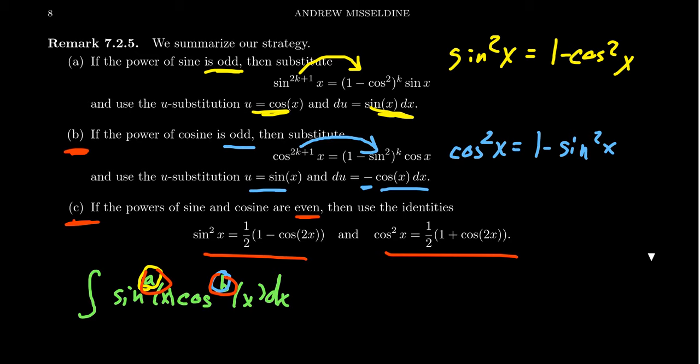Now, the higher the exponents are, the harder this process is, but using u-substitutions and the appropriate trigonometric identities, that is, the Pythagorean and half-angle identities, we can calculate any integral involving a product of sine x and cosine x.